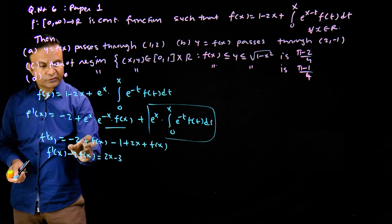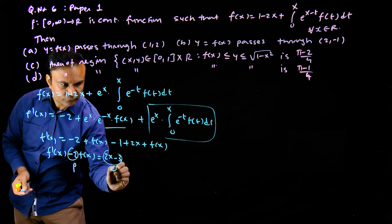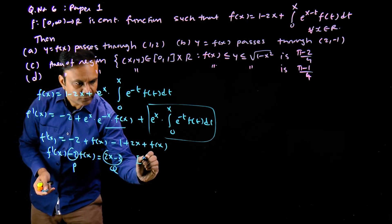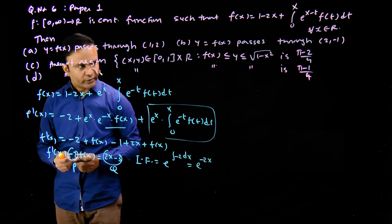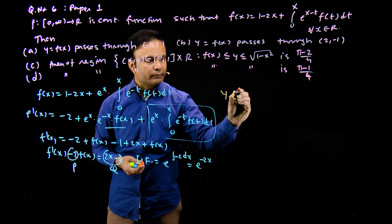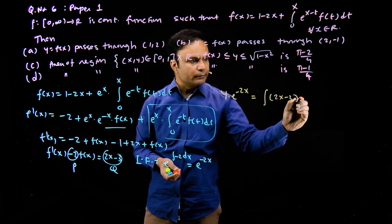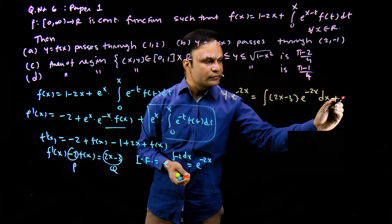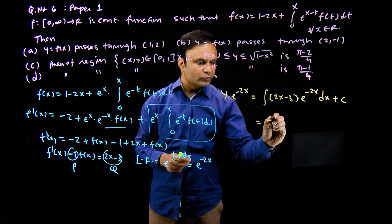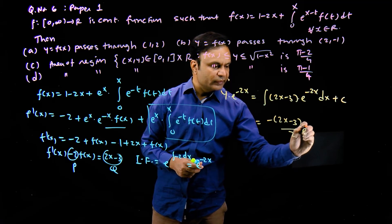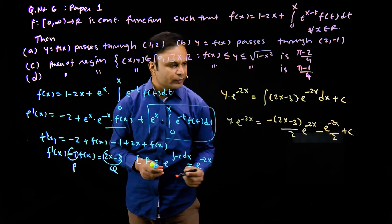This is a linear differential equation where p = -2 and q = 2x - 3. The integrating factor is e^(∫-2 dx) = e^(-2x). The solution is y · e^(-2x) = ∫(2x - 3) · e^(-2x) dx + C, which you integrate using integration by parts.